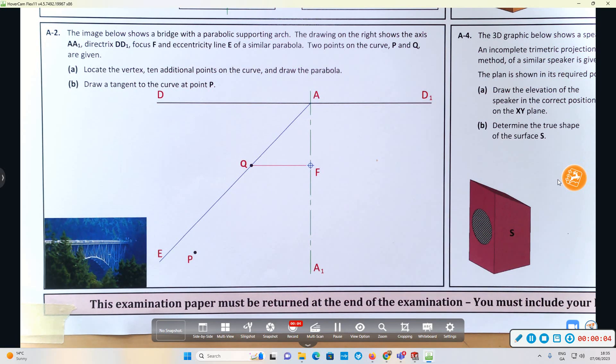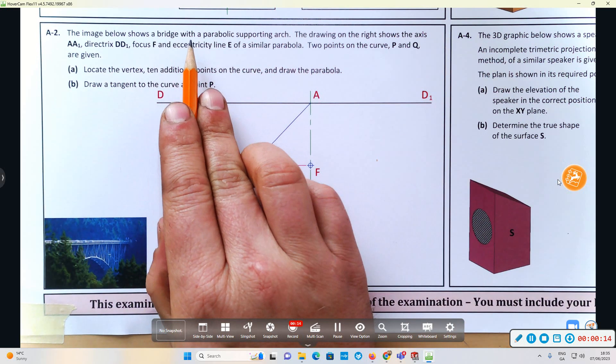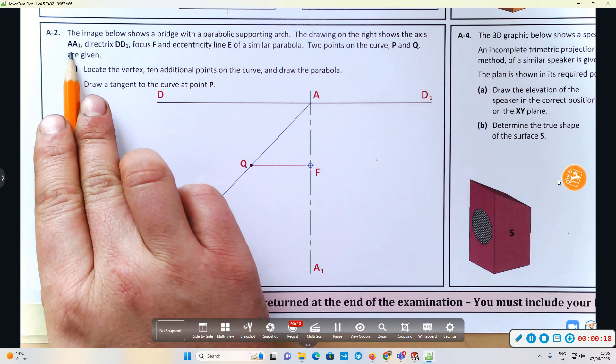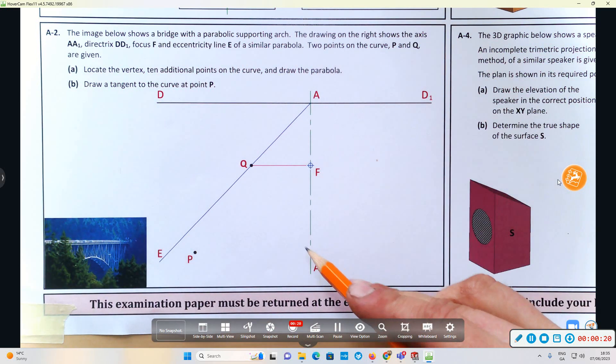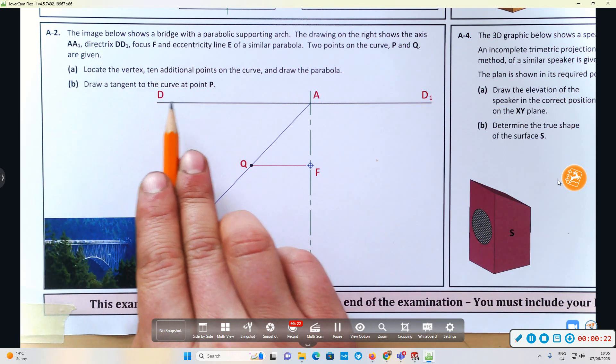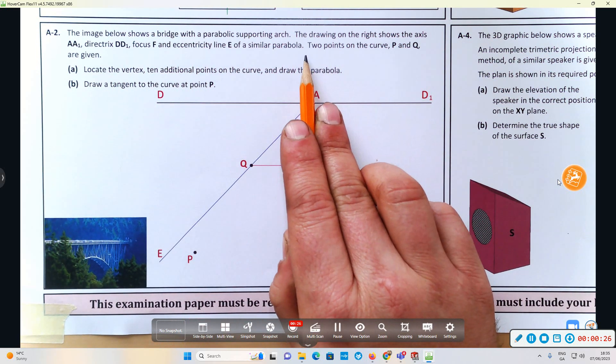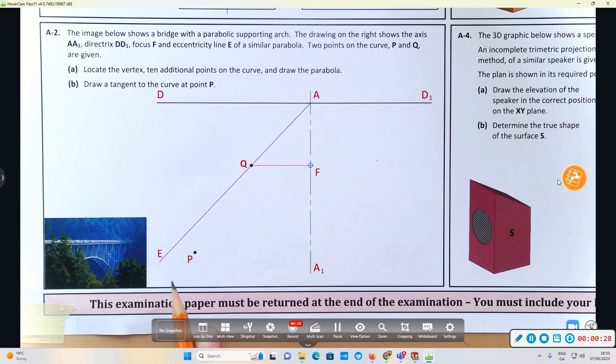Welcome to this DCG question, question A2 of the 2022 deferred exam paper. The image below shows a bridge with a parabolic supporting arch. The drawing on the right shows the major axis AA1, directrix DD1, the focus, and the line of eccentricity. Two points on the curve, P and Q, are shown.